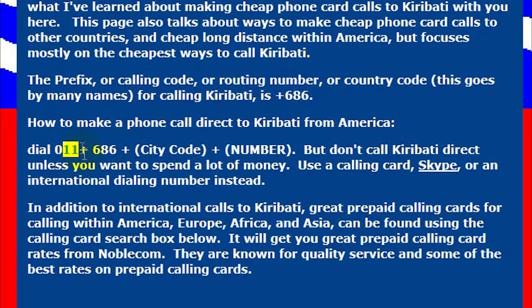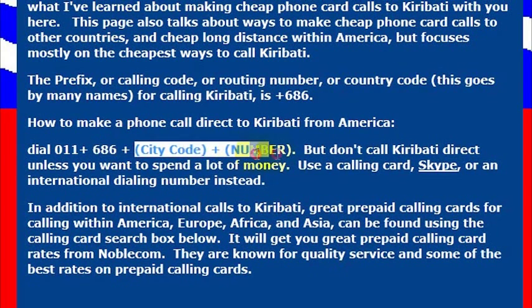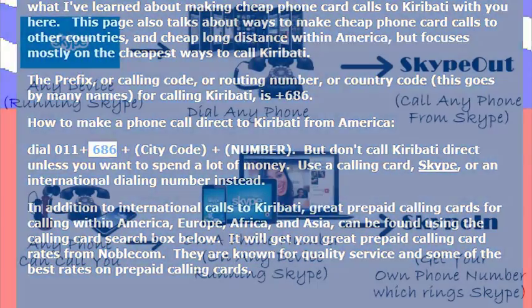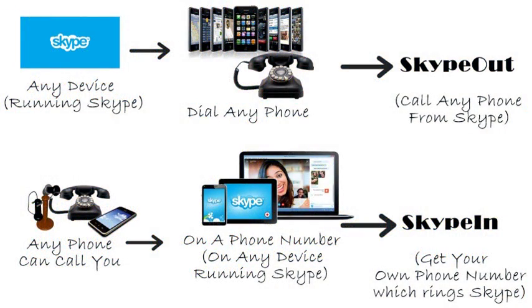Dialing 011 gets me out to an international line. Then I dial 686, which is the country code for Kiribati, and then the phone number that I want to call. Again, the country code is 686 for Kiribati.